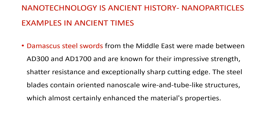Another example is Damascus steel swords from the Middle East, made between AD 300 and AD 1700, known for their impressive strength, shatter resistance, and exceptionally sharp cutting edges. The steel blades contain oriented nanoscale wire and tube-like structures which significantly enhanced the material's properties.